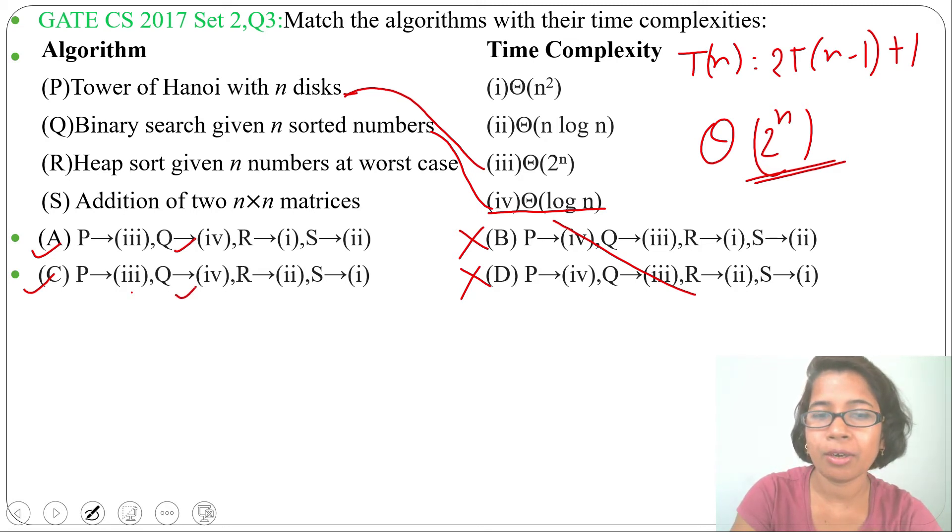Heap sort given n numbers at worst case. For heap sort, running time is Θ(n log n). So R is related with 2. But in option A, R is related with 1, so option A is wrong.